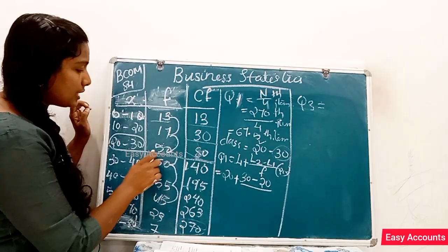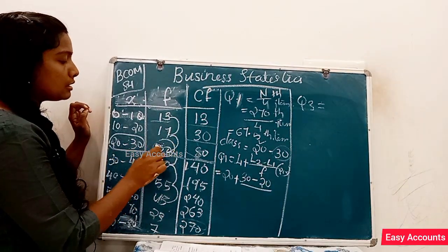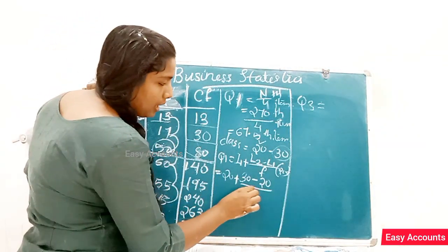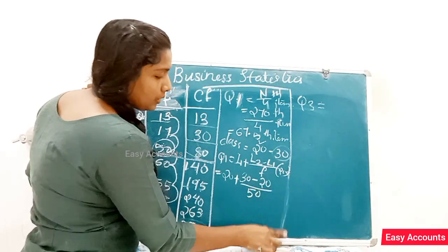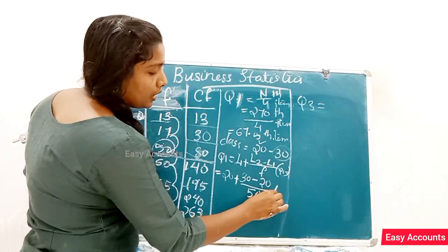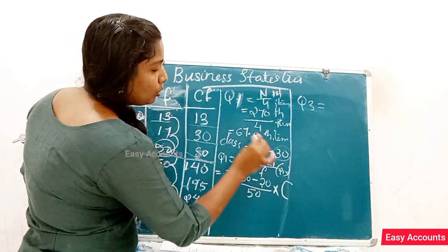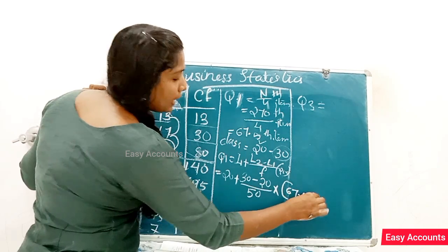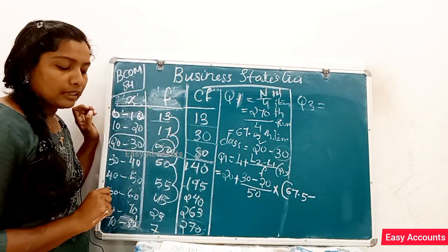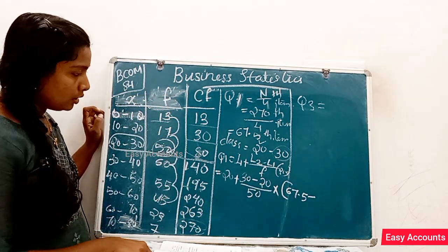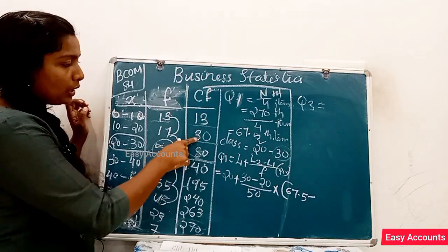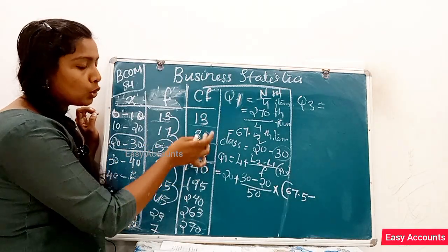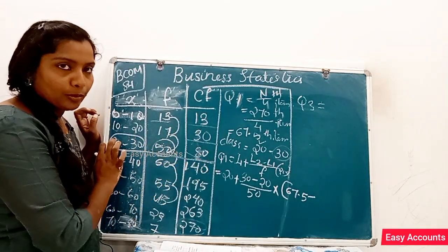The frequency is 50. Class — I have a frequency of 50, 80. Q1 = 68.5 minus C. We are at 30 cumulative frequency, then 40.